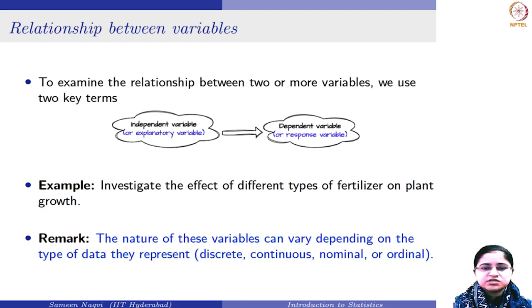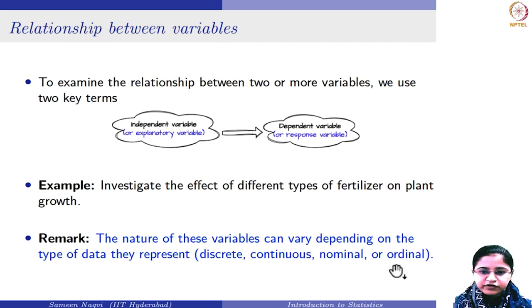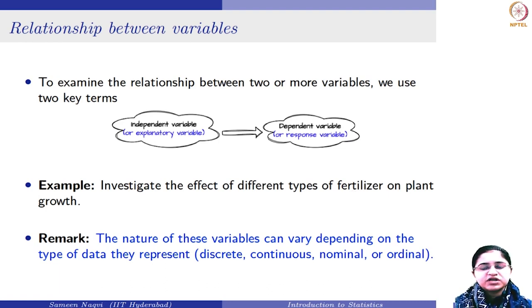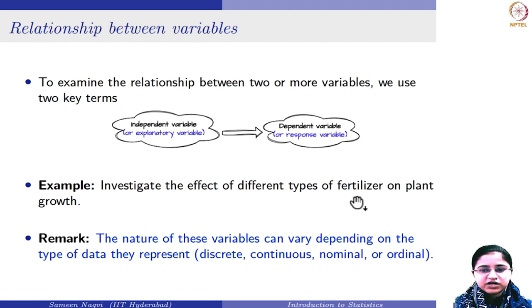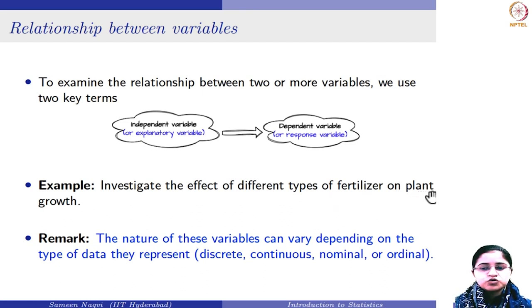Note that the nature of these variables: the independent variable can be of discrete, continuous, nominal, or ordinal type. Similarly, your dependent variable can also be of these types. For instance, in this example, different types of fertilizers are basically different categories — you can categorize them into different labels, but you cannot order them. So this is basically your nominal variable. The independent variable in this case is of nominal type. Whereas plant growth is a continuous variable because you are measuring the height of the plant, and height is a continuous variable.